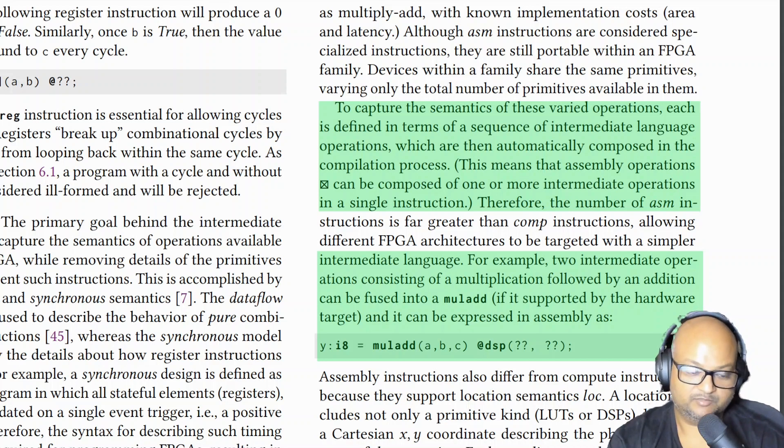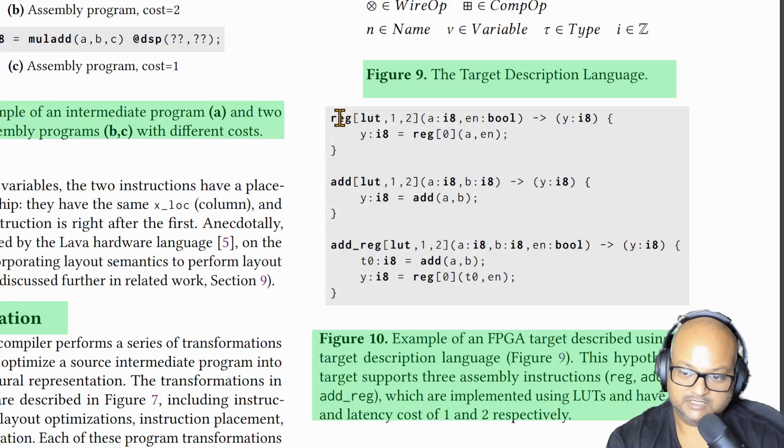The way we specify the semantics of this assembly language is to define it in terms of a sequence of intermediate language operations. For example, this is how we would specify an add assembly language instruction and how it maps to the lookup tables and lower level hardware and registers of a specific FPGA family. So we need to specify this mapping of assembly language to intermediate language for each family of FPGAs that we are targeting.